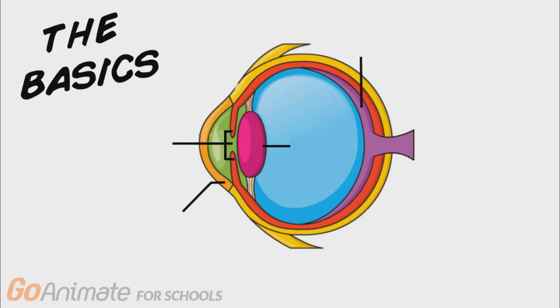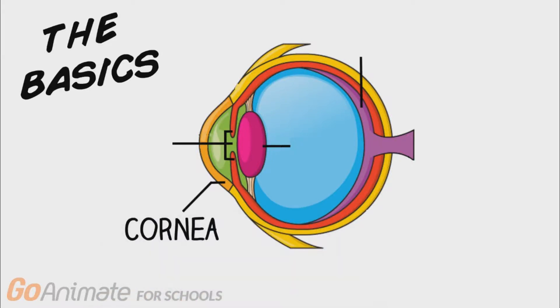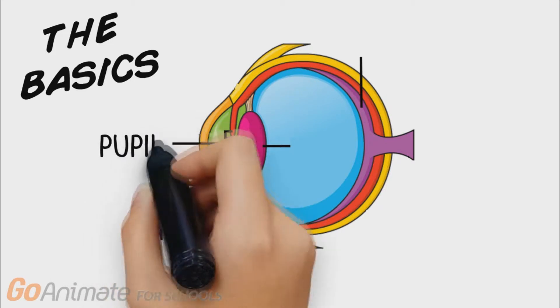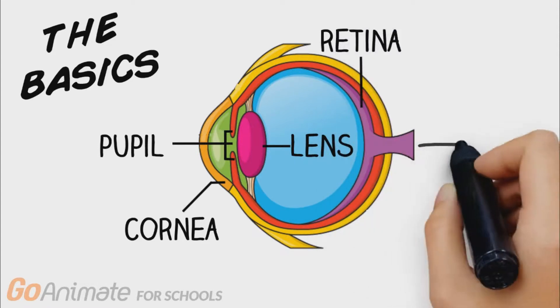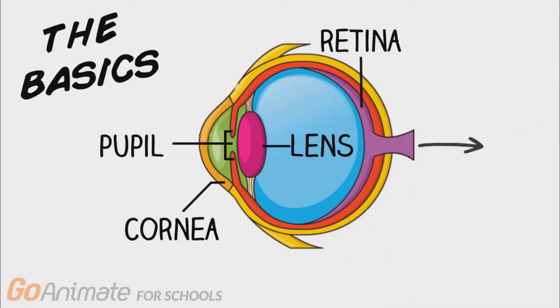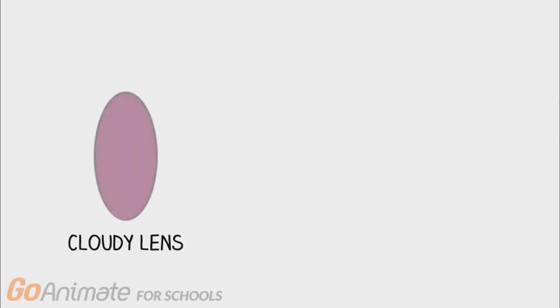Let's start off with the basics. Light from your environment passes through the cornea and into your eye through the pupil. Light then passes through the lens and travels to the back of the eye to hit the retina. It is here that light is converted to a message to be carried to the brain. A cataract occurs when the lens of your eye begins to harden and become cloudy.